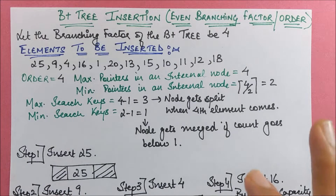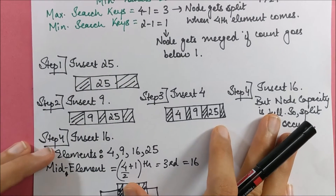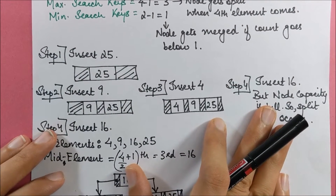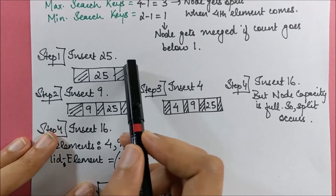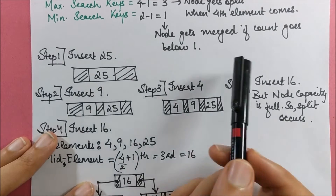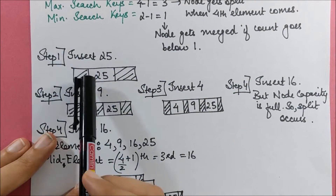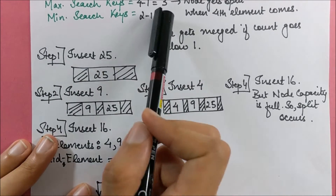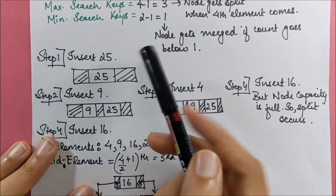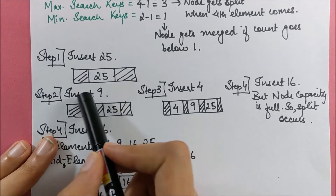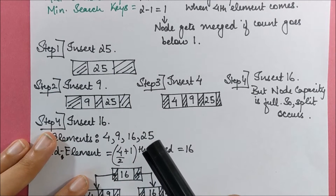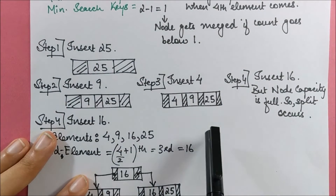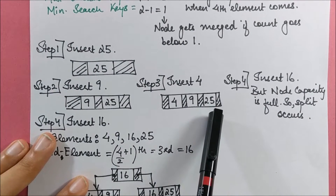Let's start inserting elements from the beginning. The first element is 25 — since it is the very first element, there is no conflict; it is inserted directly with null left and right pointers. Next, when we insert 9, the node can still accommodate up to three elements, so we insert 9 directly while maintaining order: 9 comes before 25. Similarly, when we insert 4, we maintain order, and the count goes to 3.